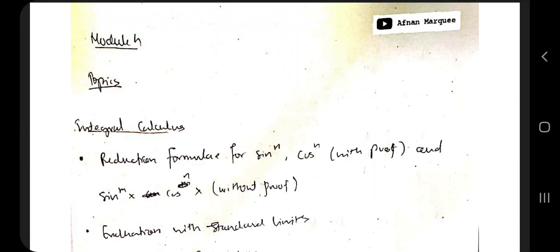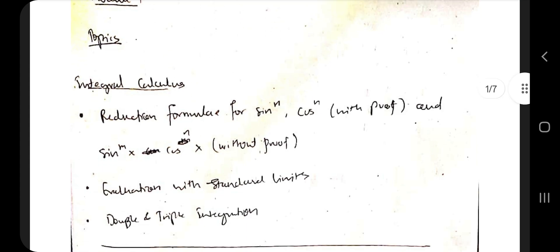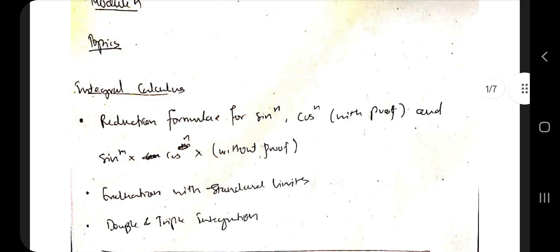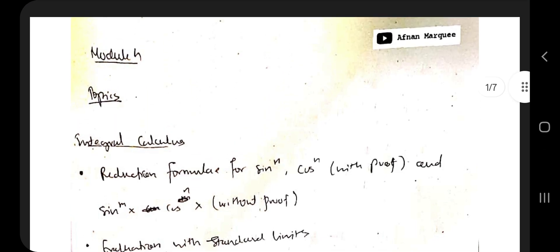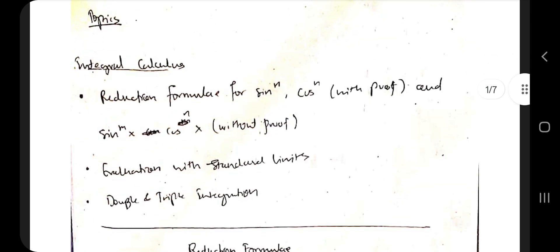Hello everyone, today in this video we'll be discussing the fourth module of 18 MAT DIP 31. There are a few topics: the reduction formula with limits and calculating answers, and the formula and application of double and triple integrals. These are the three topics we'll be discussing. If you like this video, hit the like button and subscribe to my channel.